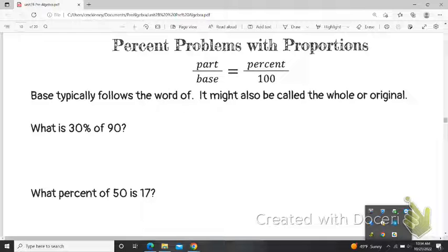When we do this, we want to think about the part over the base is equal to the percent over 100. Once we have a proportion set up where we know 3 out of 4 of these things, we can cross multiply and then divide to find our solution.